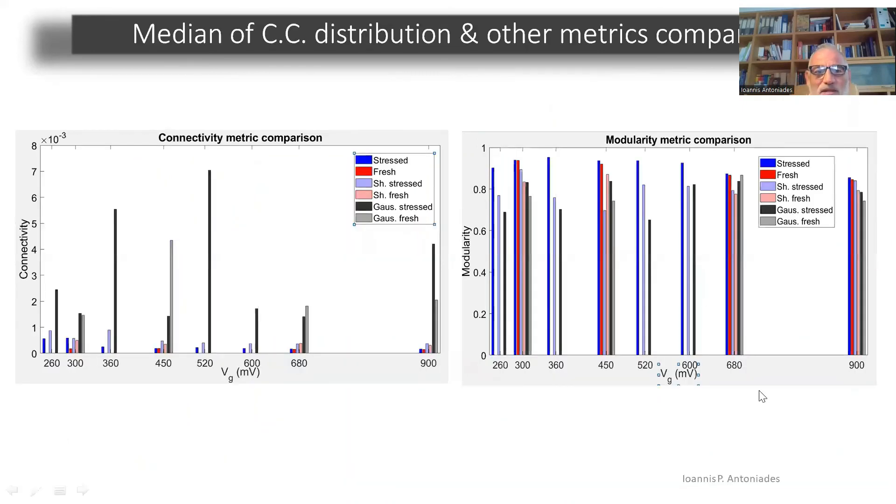In the next slide, I show you two more metrics, connectivity or modularity. The interesting thing here is that if you do another processing of the time series, if you Gaussianize, that is you keep the temporal correlations, but you destroy the fat tails, and so you have a Gaussian distribution of differences, you see that there is a very pronounced difference in the resulting visibility graphs. The Gaussianized time series have large connectivities.